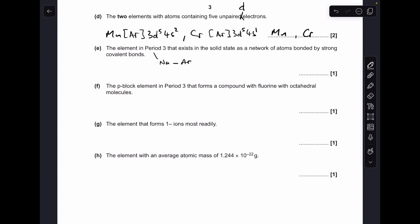Part E, so we're looking for the element in period 3, that's sodium to argon, that has the giant covalent structure. And it is silicon.